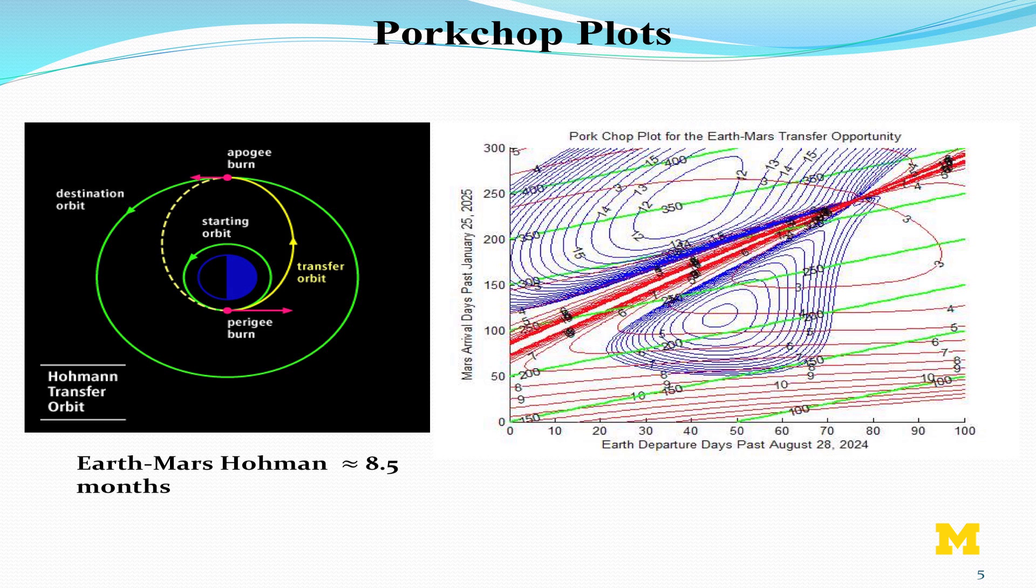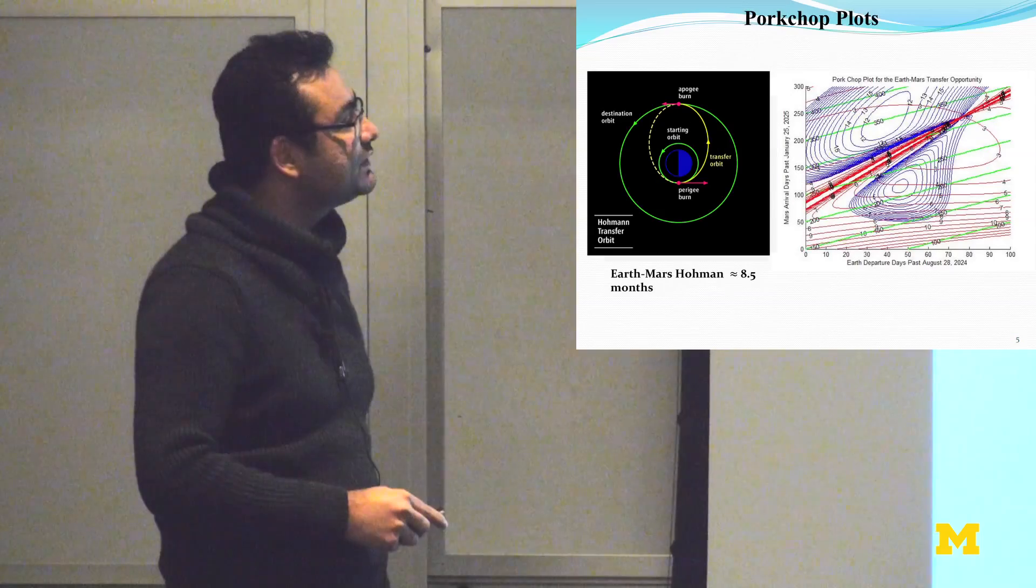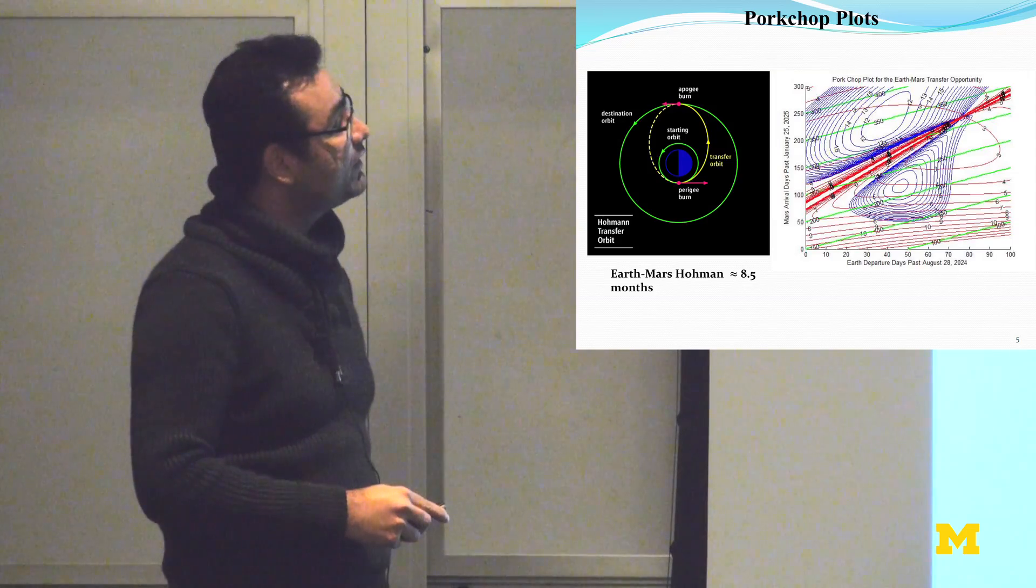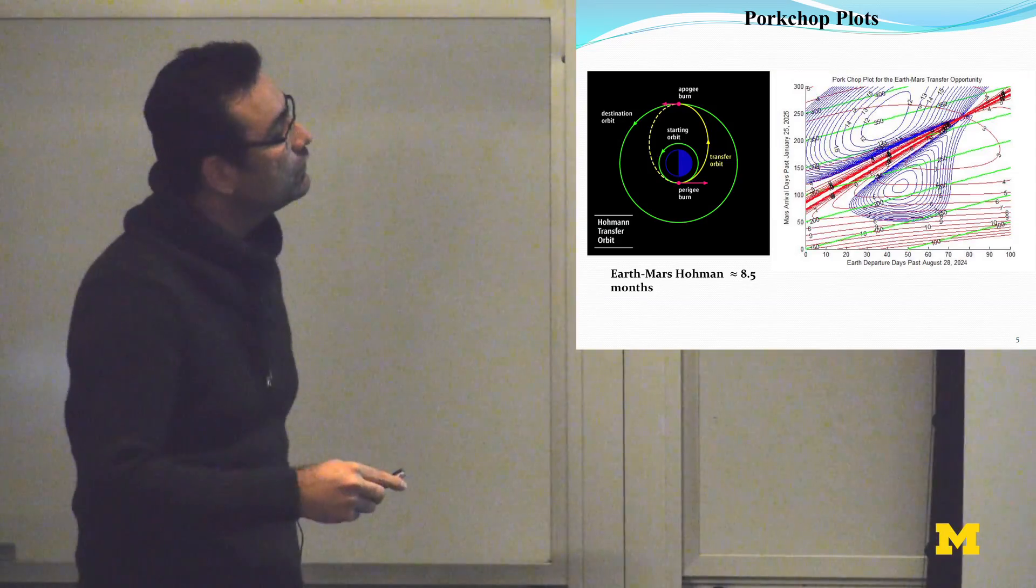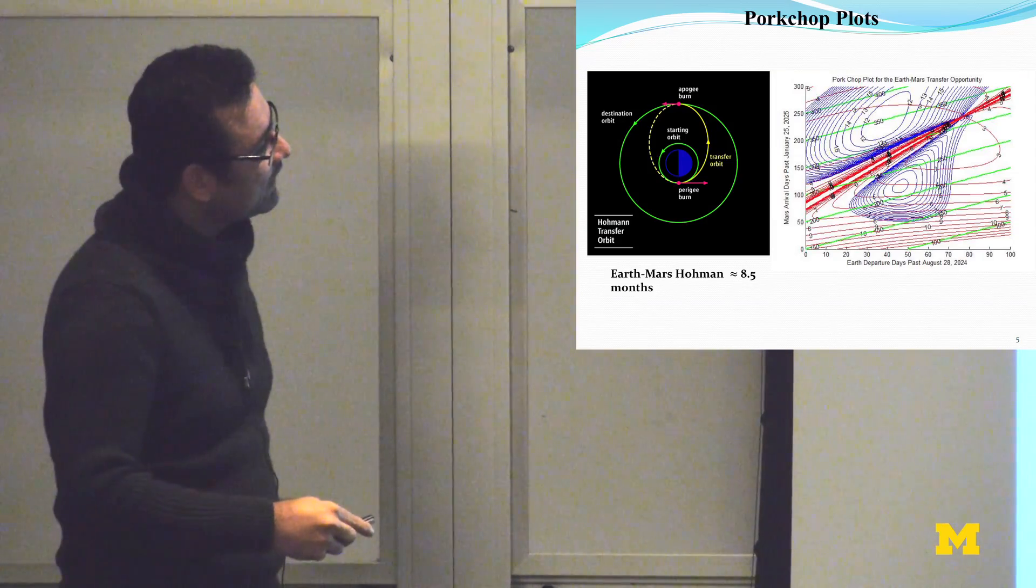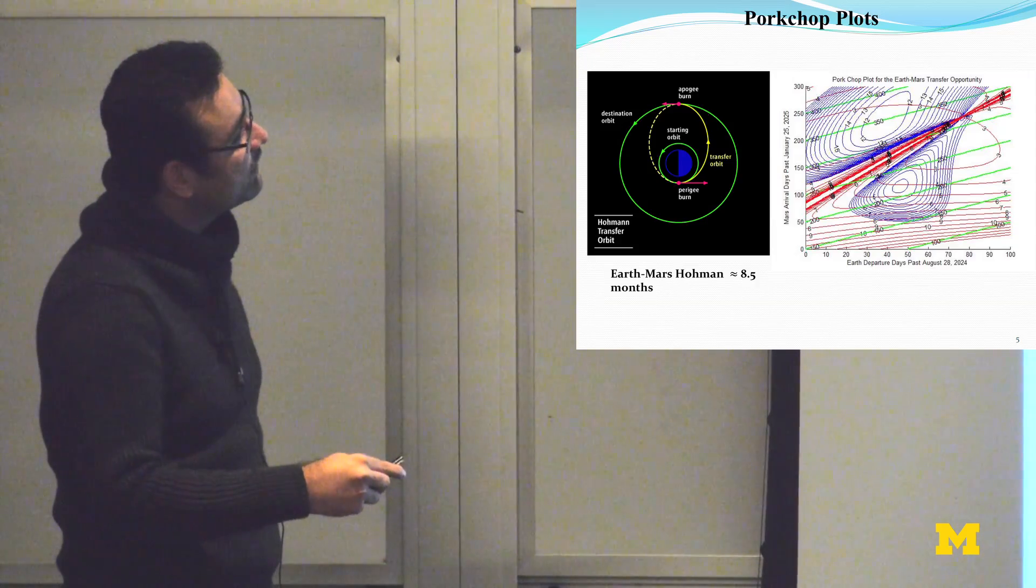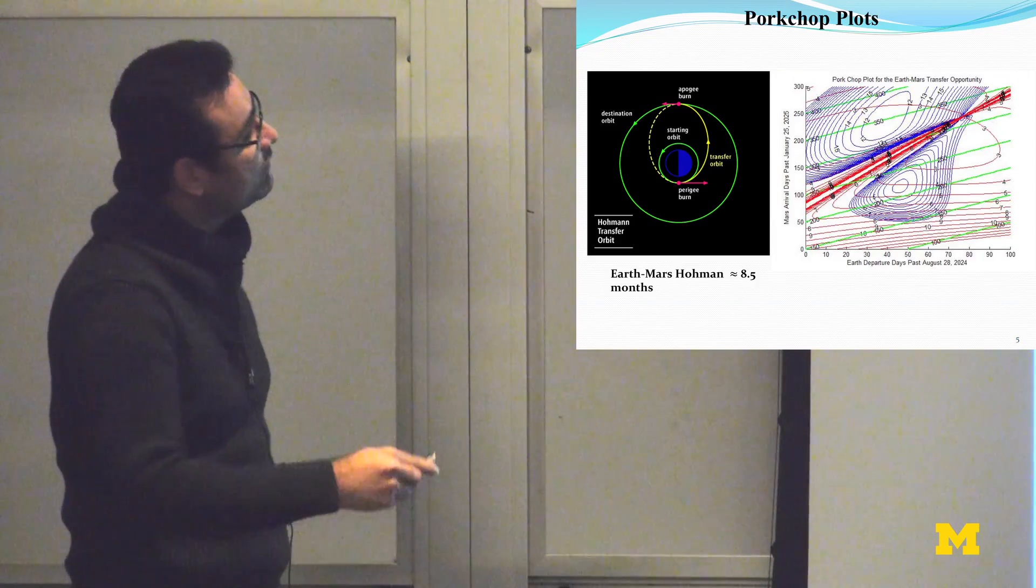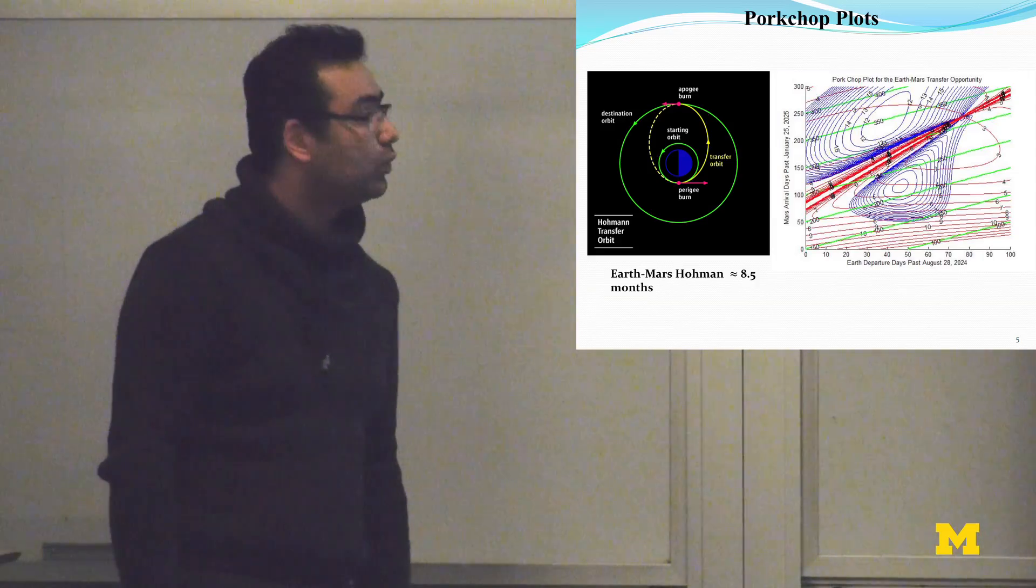The simplest way to design a transfer between Earth and Mars is called the Hohmann transfer. It basically assumes that the Mars orbit and Earth orbit are pure circular. Then we're going to have an elliptical transfer that uses two impulses, one at perigee and one at apogee. With these two, the transfer is going to happen on the right branch of this ellipse. Then we apply the second impulse, and we are actually reaching the Mars orbit.